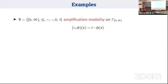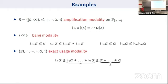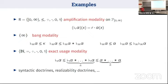Some examples: using the doctrine of predicates valued in non-negative real numbers, we can define the amplification modality using the semiring of non-negative reals, defined by scalar multiplication. Using the singleton semiring, we recover the usual bang modality of linear logic. Using the semiring of natural numbers ordered by equality, we get the exact use modality of bounded linear logic, where bang-n of alpha provides exactly n copies of alpha.